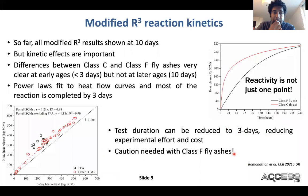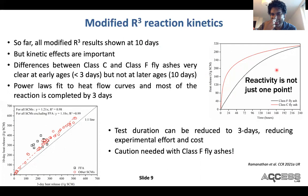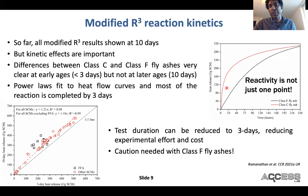One of the most important points I want to make is that reactivity is not just one point. All the results I showed so far were at 10 days, but the whole curve is important — kinetic effects are really critical here. When you look at class C versus class F fly ash, if you look only at 10 days, you might think these materials are exactly the same, but this is absolutely not true. At one day or three days, these materials are very different, and this is of course how these materials behave in concrete. Early age differences are apparent in class C versus class F fly ash; later age differences are not.